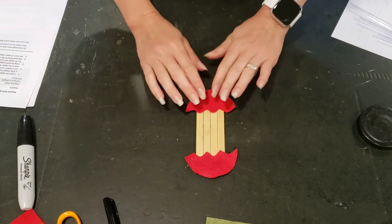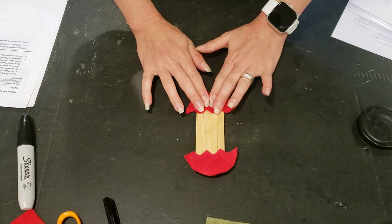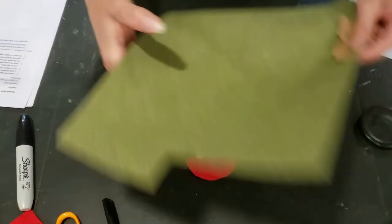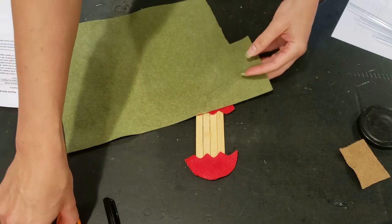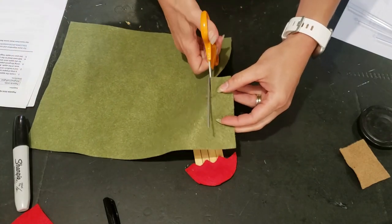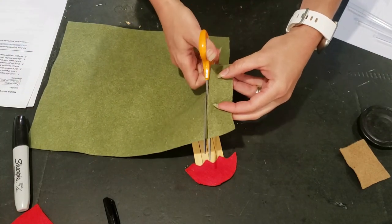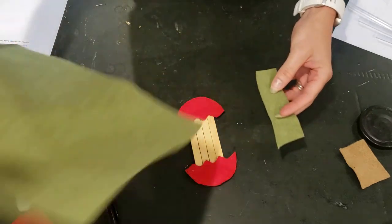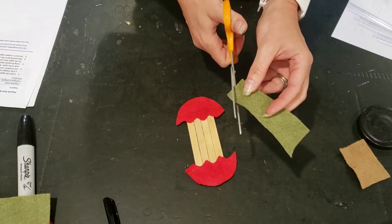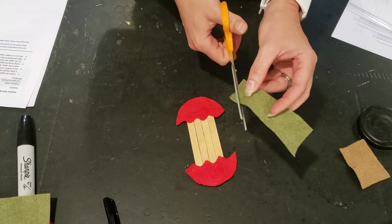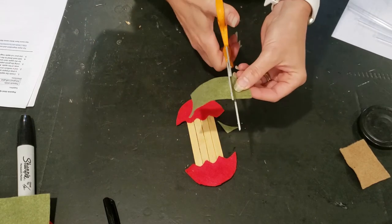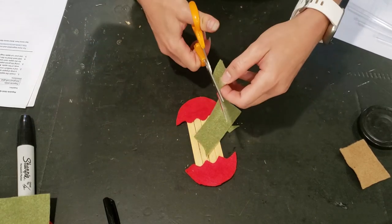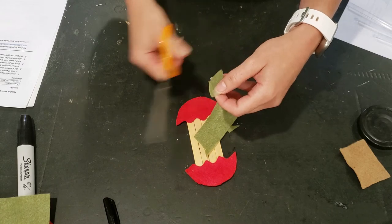And then we are going to add a little leaf, so that's what I'm going to use my green felt for, or you can use your green construction paper. I'm just going to cut an oval with pointy ends. That's basically all a leaf is. Curve that a little tiny bit more, there we go.